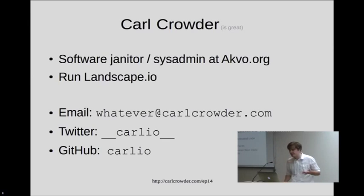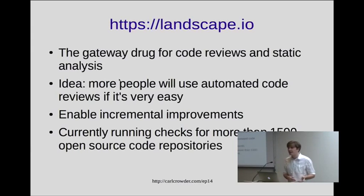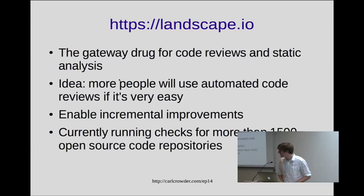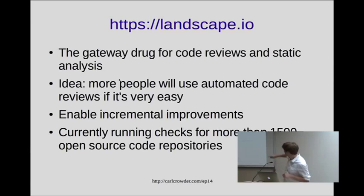Landscape is code reviews and automatic static analysis as a service. The idea is that if it's really super easy — you can click with your GitHub account, log in, and get all that stuff straight away — then a lot of people will use it. It officially launched in November, I've been coding it for more than a year, and there are about 1,500 open source repositories on there being checked all the time. It's free for open source. You may have seen the health badge on some GitHub repos.